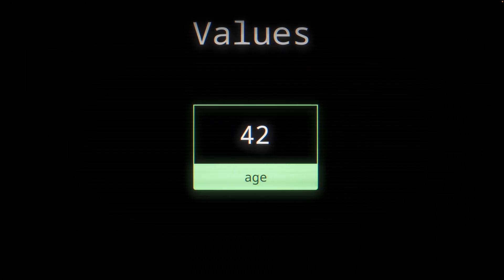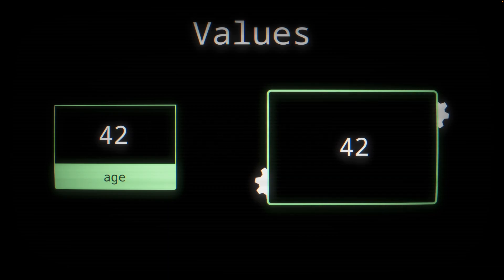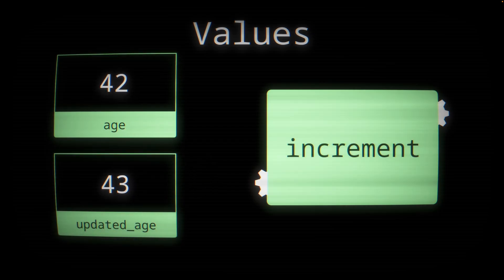A value is some data — here 42 — stored in a variable called age. We can pass that variable by value into an increment function, and the value of 42 is sent to the function. That function processes the data and returns a new value, 43, which is then stored in a new variable. Our original value remains unchanged — simple enough.